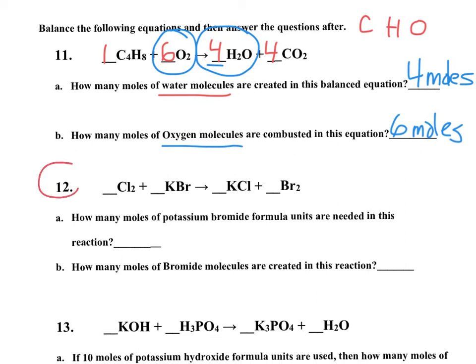Let's take a look at number 12. Let's balance this out. 2 chlorine here, so I'm going to put a 2 there. Now, I've got my chlorines, but that's 2 potassiums. I'm going to need 2 potassiums there. It's going to give me that, but that's going to give me 2 bromine. I think I'm balanced. 1, 2, 2, 1.